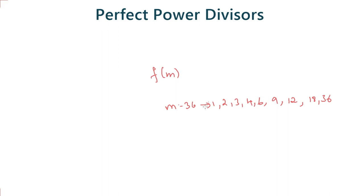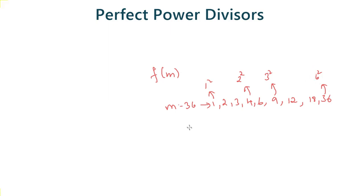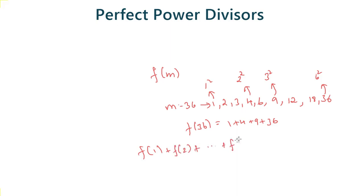Out of these factors, 1 is a perfect power because we can write 1 as 1 squared or 1 cubed. Then 4 is a perfect power since we can write 4 as 2 squared. Similarly, 9 is a perfect power since we can write it as 3 squared, and 36 is a perfect power since we can write 36 as 6 squared. Note that these powers need not just be squares — they can be cubes, 6 to the power 4, anything. So f will be the sum of such factors: 1 + 4 + 9 + 36. We are supposed to find f(1) + f(2) + ... + f(n), where the maximum value of n is 10^18.